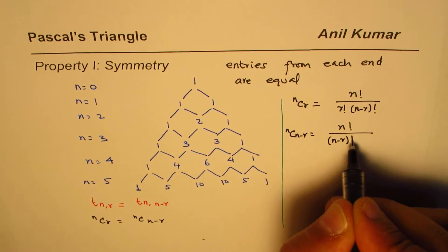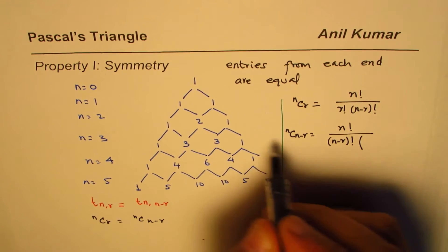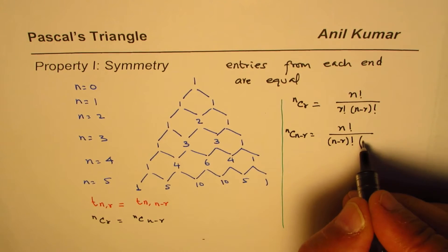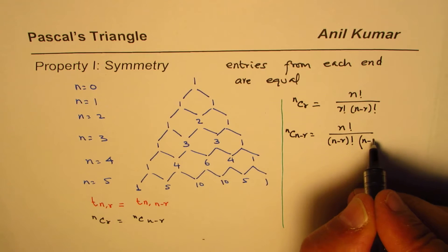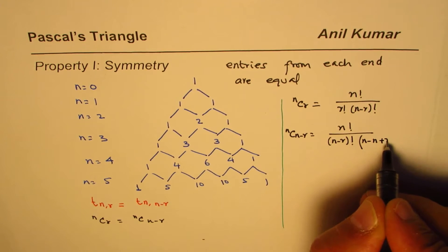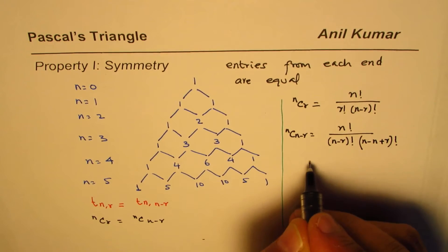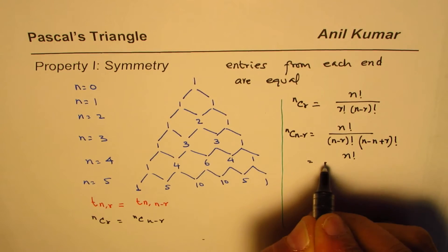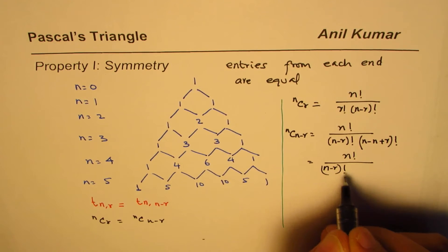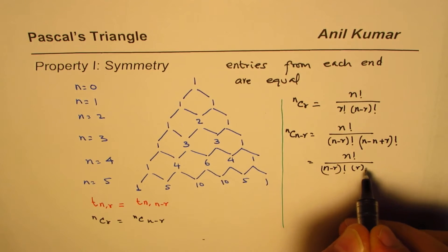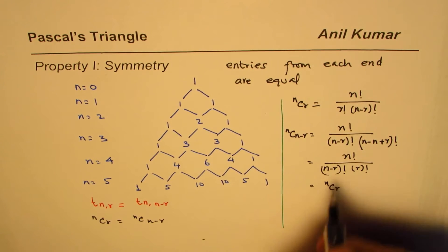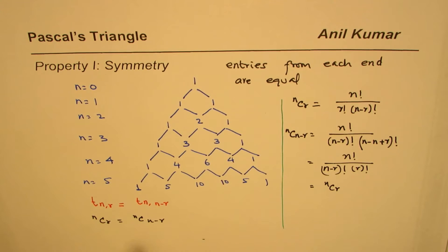The second factorial in the denominator becomes n minus (n minus r), which simplifies to r factorial. So we get n factorial over (n minus r) factorial times r factorial, which is the same as nCr. This completes the proof for the symmetry of Pascal's triangle.